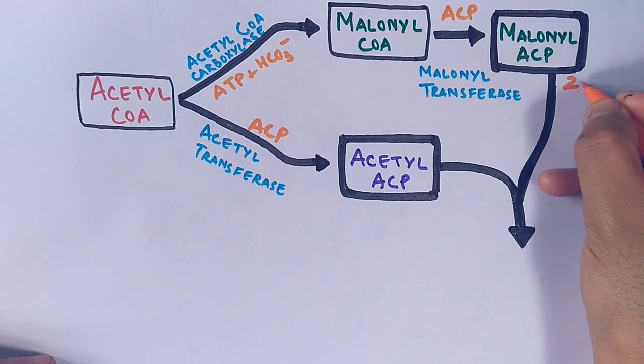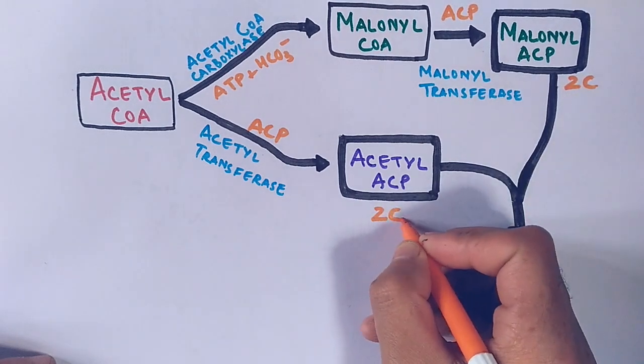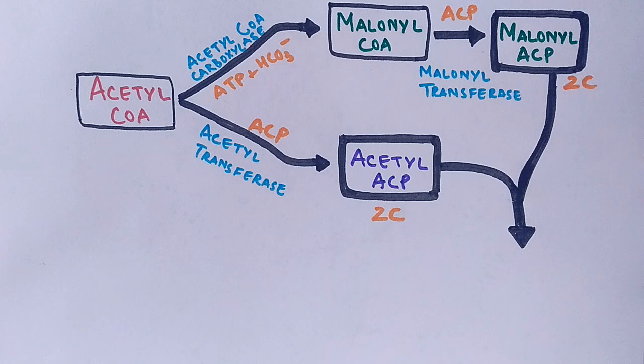And also remember we have these molecules and they have two carbon atoms in each of the molecules—malonyl-ACP has two carbon atoms and acetyl-ACP has two carbon atoms.